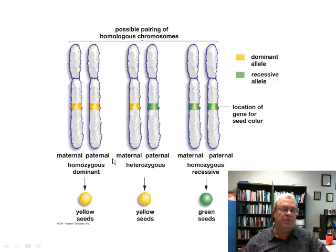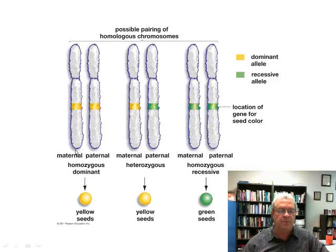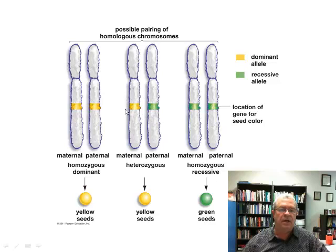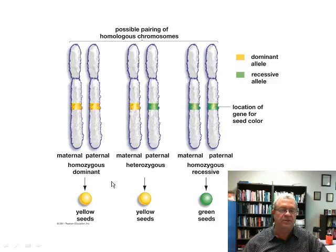So he came up with some terminology to express, in general, what these genotypes were. These are genotype terms, right along the bottom here. For any genotype in which there are two dominant alleles, that genotype is said to be homozygous dominant. When you have a genotype with one of each allele, one dominant and one recessive, that genotype is said to be heterozygous. And when you have the two recessive alleles, that genotype is said to be homozygous recessive.